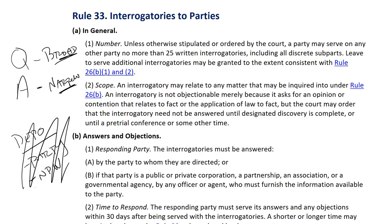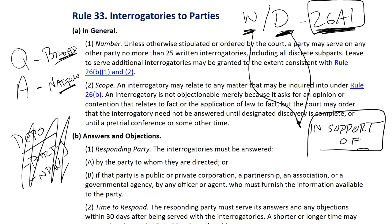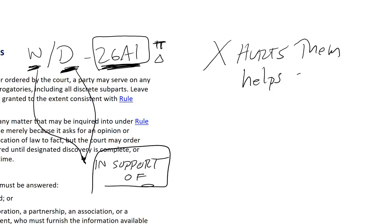You might think: Professor Nathanson, isn't information on witnesses and documents already covered under Rule 26A1 Initial Disclosures? That's true — Rule 26A1 does require parties to provide names of witnesses and descriptions of documents without being asked. However, keep in mind that Rule 26A1 Initial Mandatory Disclosures is only for information in support of the disclosing party's case. It will require the plaintiff to give up information that helps the plaintiff, and require the defendant to provide information that helps the defendant. It's not going to require them to give information that hurts them or helps their opponent.